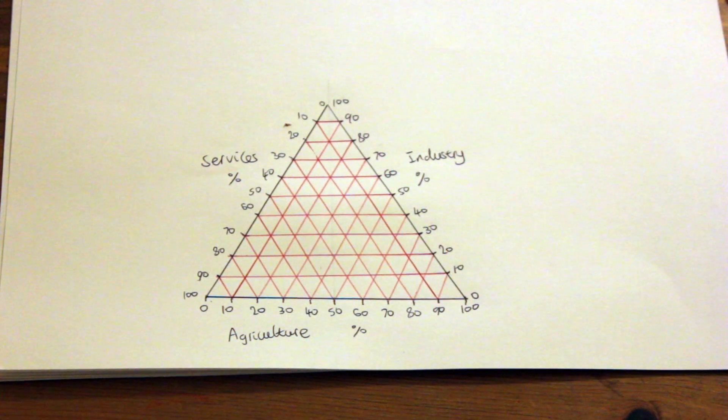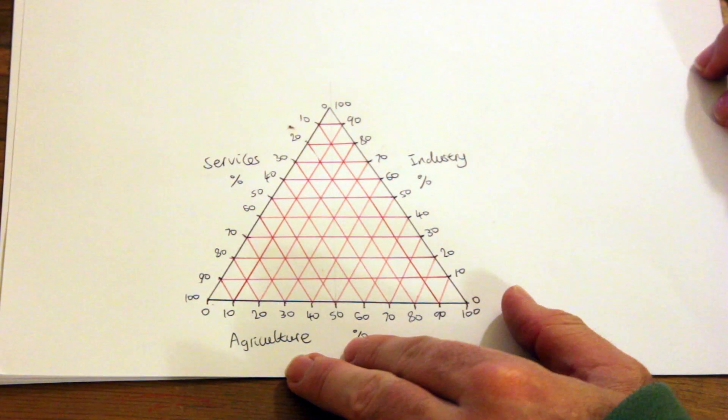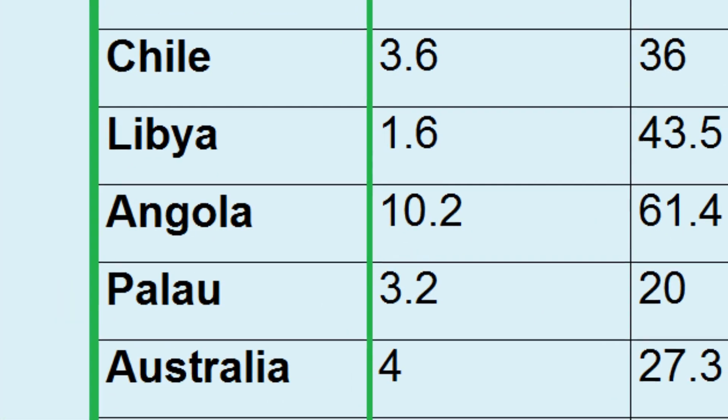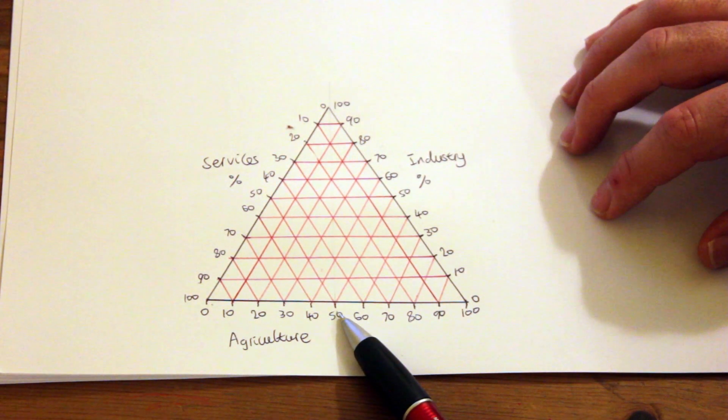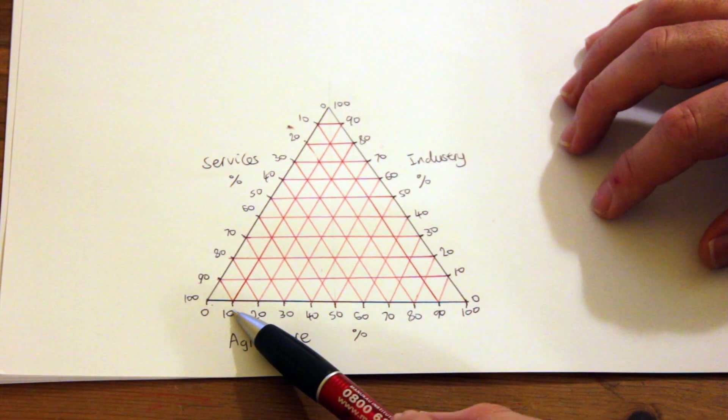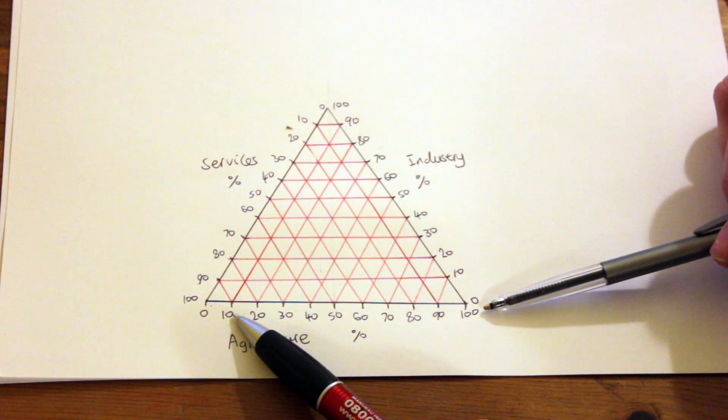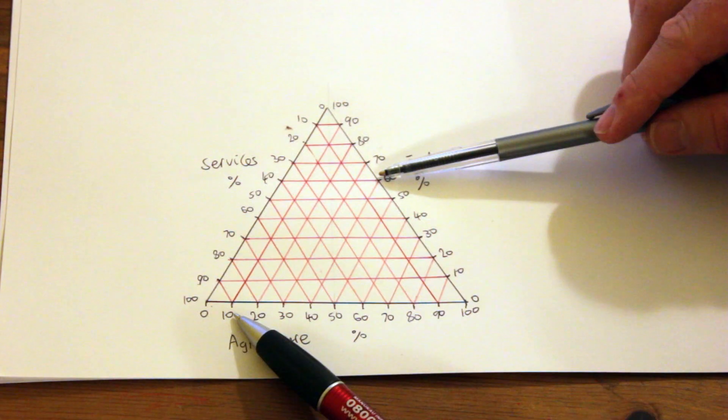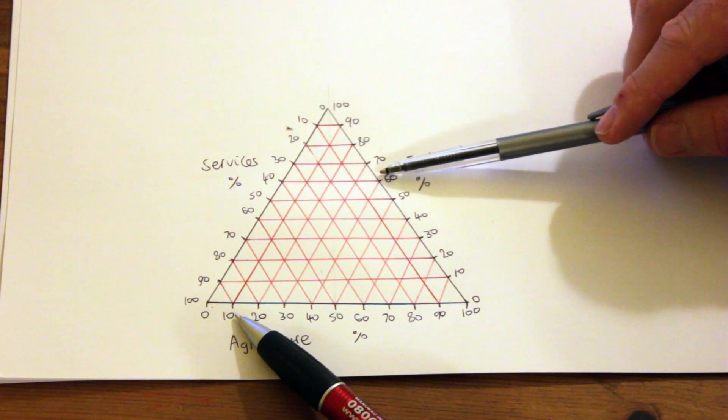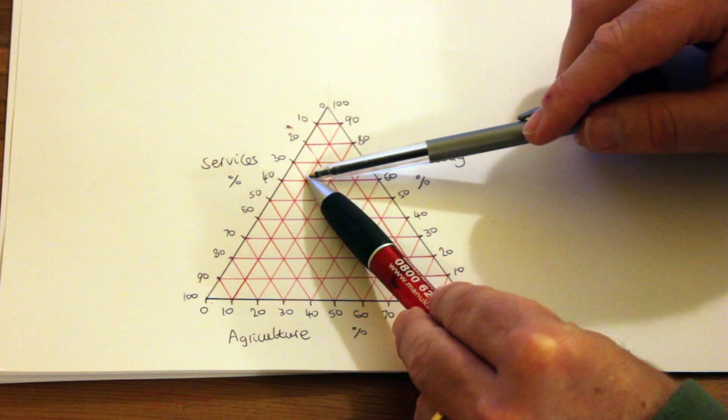Now I'm ready to plot the points for our 12 countries. I will do this by finding the point where all three elements intersect. Now Angola for example has 10.2 percent employed in agriculture, so I'm going to run my pen along the scale for agriculture. Then I'm going to run my other pen along the scale for industry on the right here until it reaches 61 percent, and that is about there. Now I'm going to use both pens and follow the lines until I find the point at which they both intersect. Intersects about here.